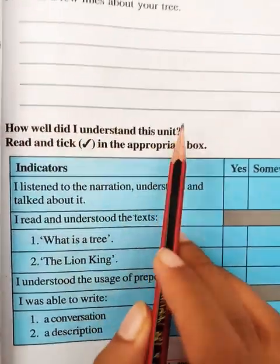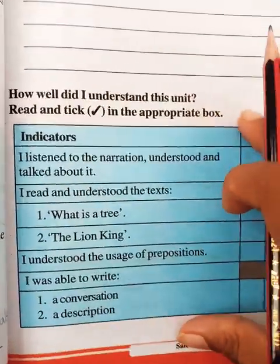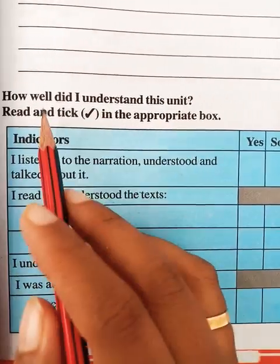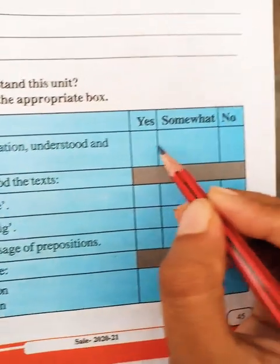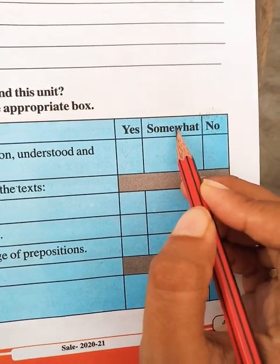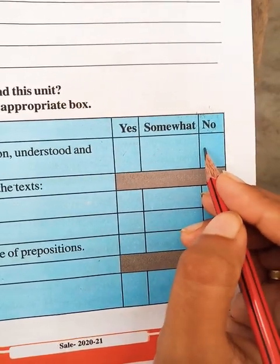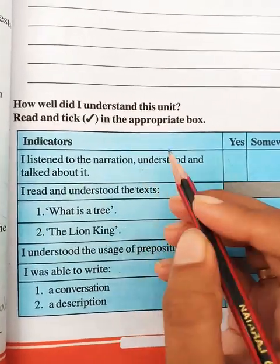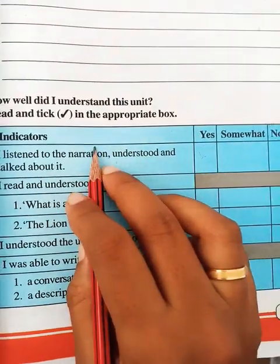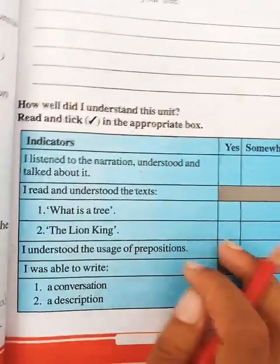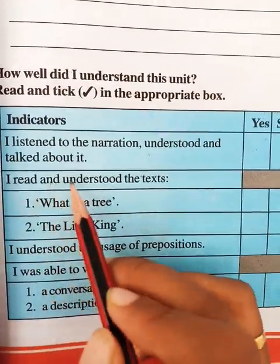At the end of every unit, you have a box: 'How well did you understand this unit?' It takes your opinion. See here - there are three options: Yes, Somewhat, and No. If you understood the lesson, tick 'Yes'. If you understood it somewhat, tick 'Somewhat'. If you don't understand the lesson at all, tick 'No'. First one: 'I listened to the narration, understood, and talked about it.' Tick accordingly so I can understand what you are and are not understanding.